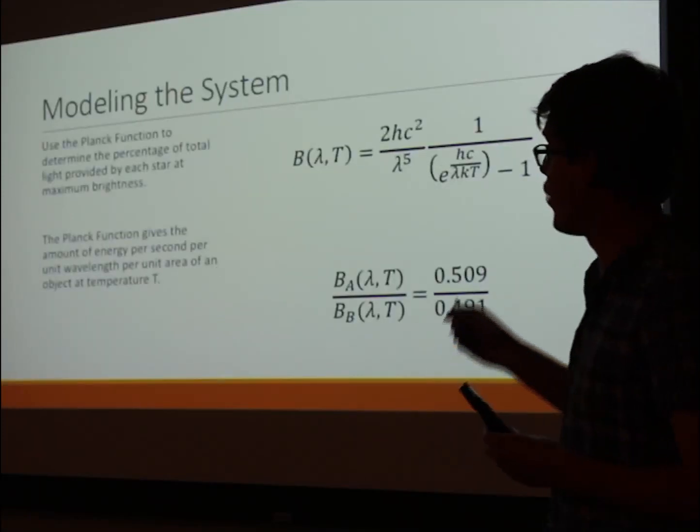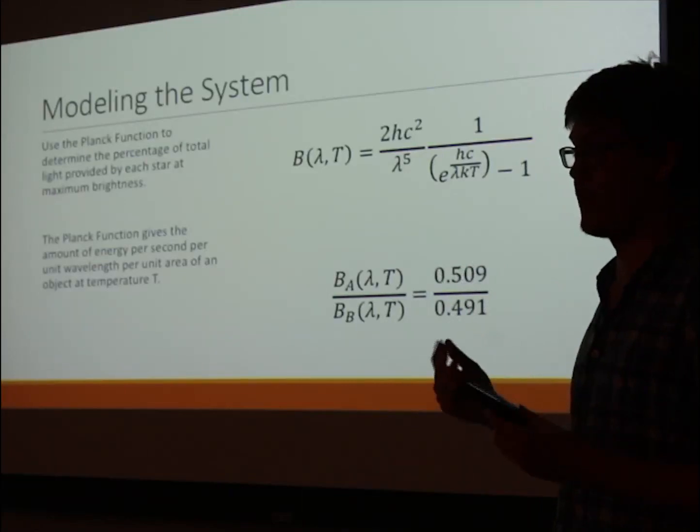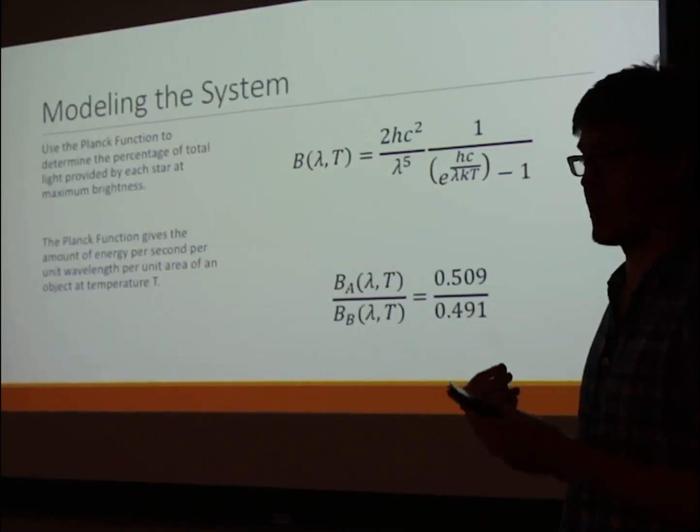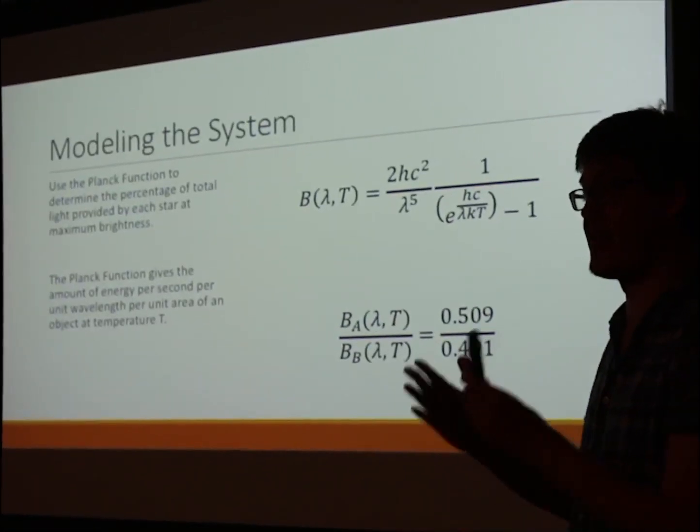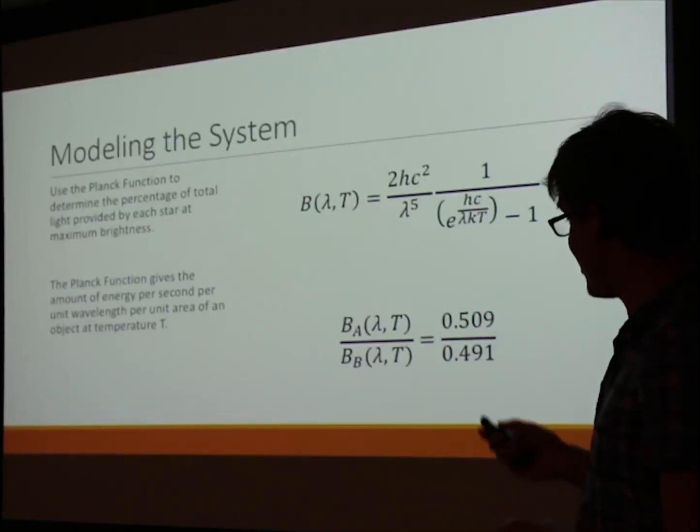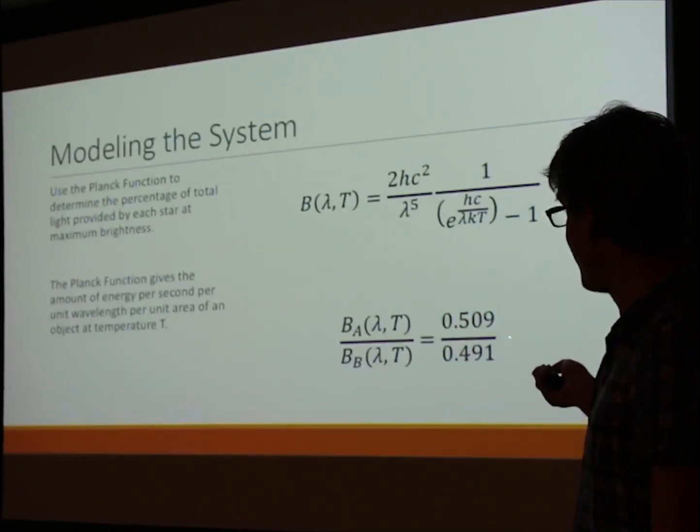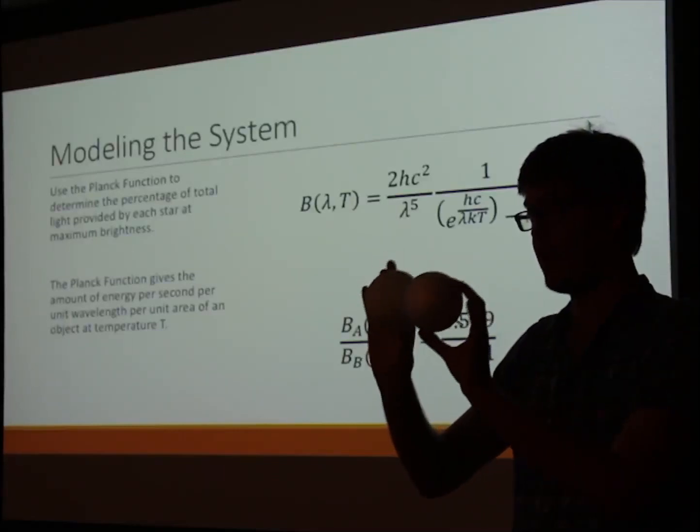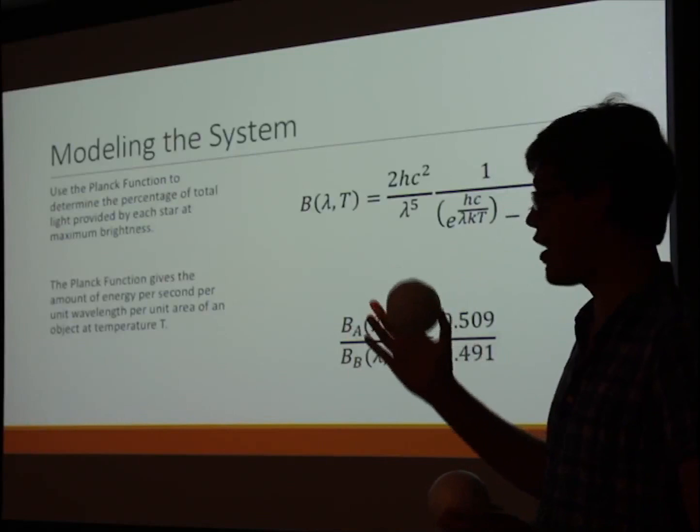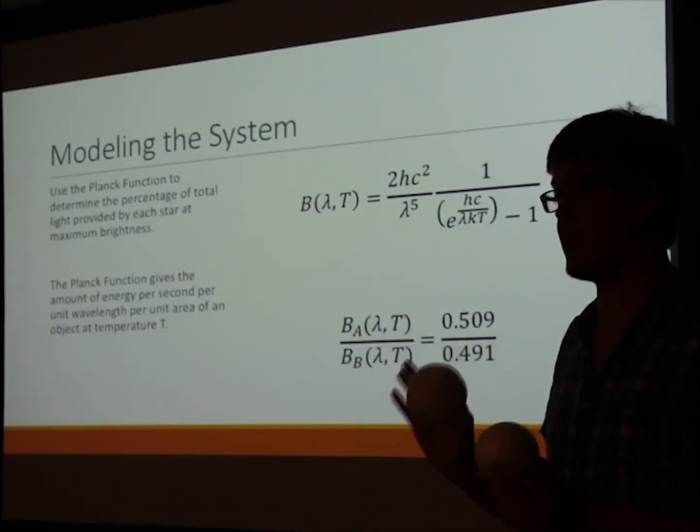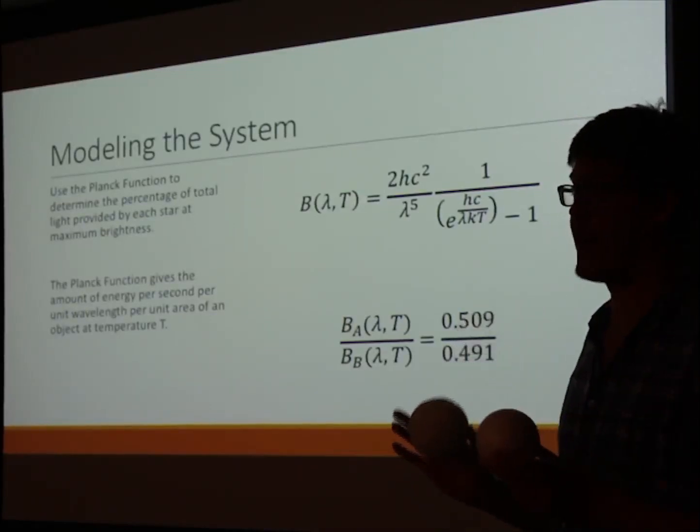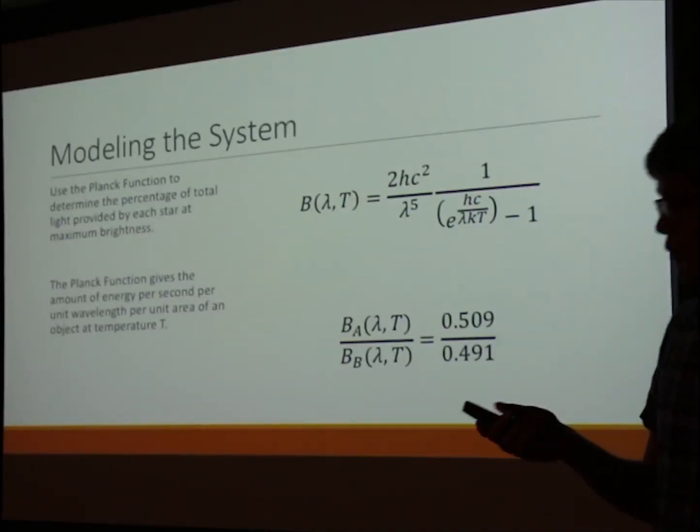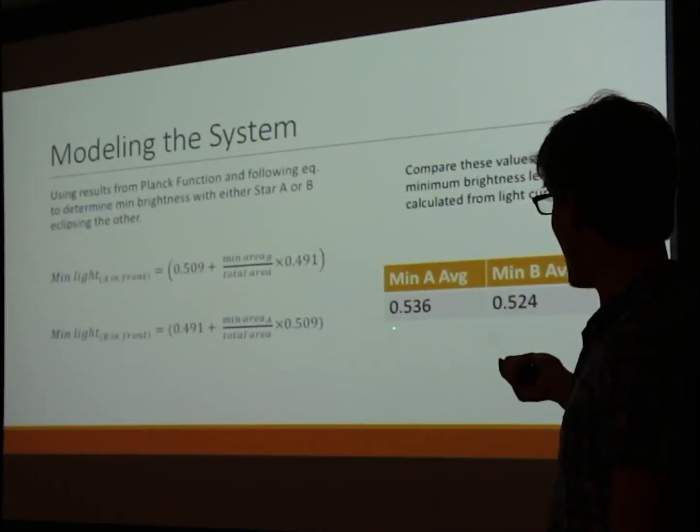Here we have what is called the Planck function. What the Planck function allows you to do is measure the energy output of a body per unit time per area based off of a certain wavelength and temperature. The reason why this is useful is it allows us to see what the ratio of the light contribution from each individual star is when they're at their maximum brightness. So when the stars are facing us like this—no light's being blocked out—the slightly hotter star, star A, is providing around 51% of the total light, whereas the slightly cooler star, star B, is providing around 49% of the total light.